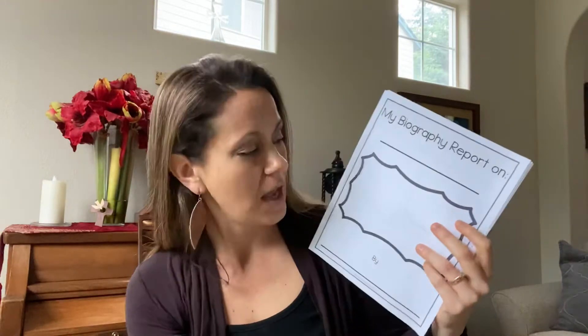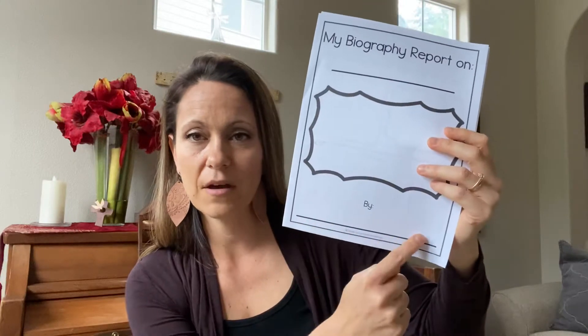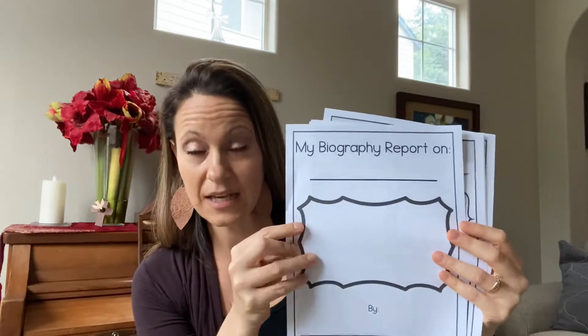For example, if I want to do Booker T. Washington, I would put his name on the front, draw some kind of picture — maybe Tuskegee — and then put my name at the bottom: Mrs. Amber Kornthal. Write it really neat, make sure you have capitals and everything. That's your front page.